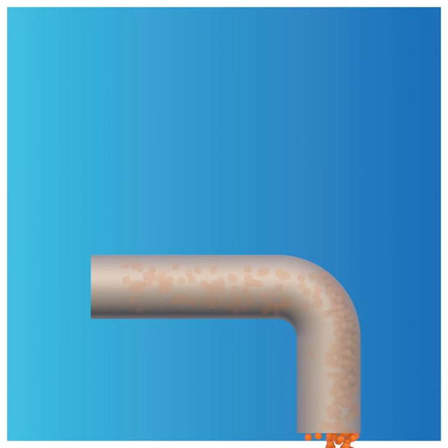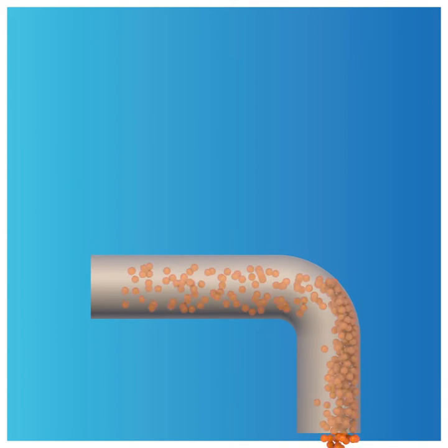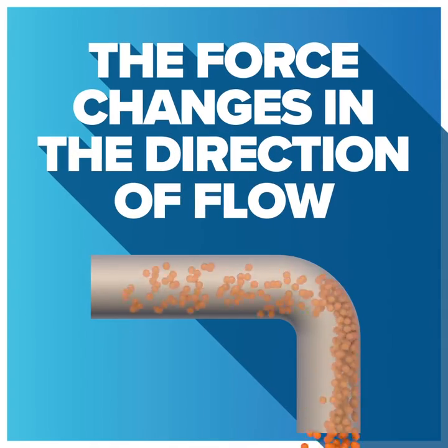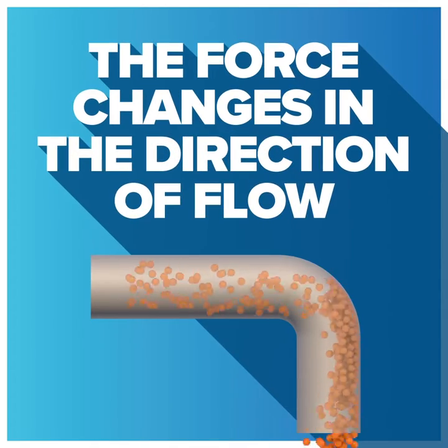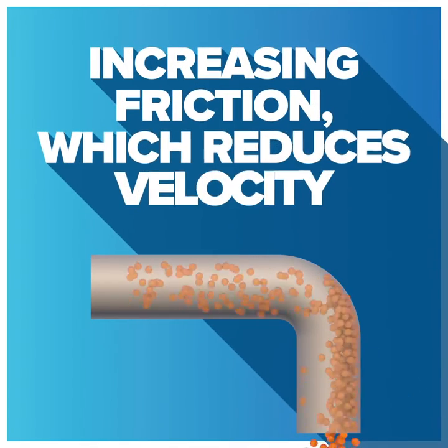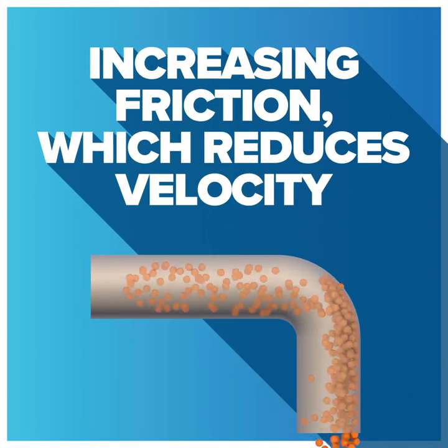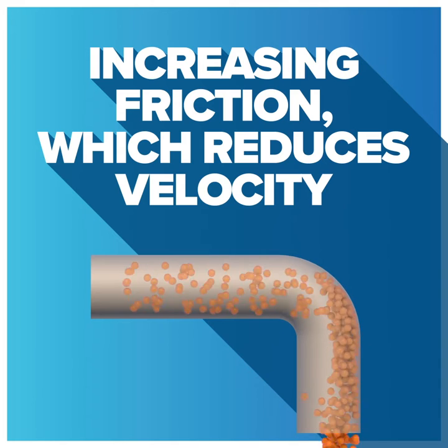As refrigerant passes through a fitting, such as a 90-degree elbow, the force change in direction or flow increases friction, which reduces velocity.